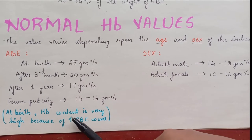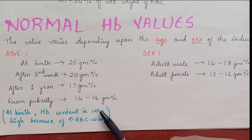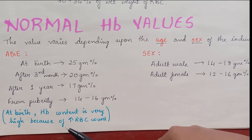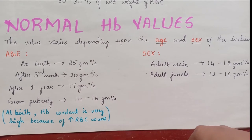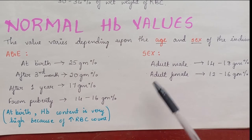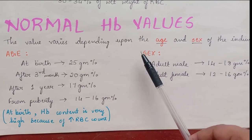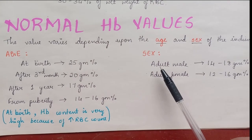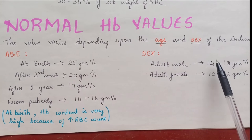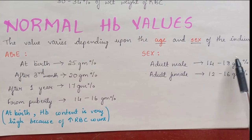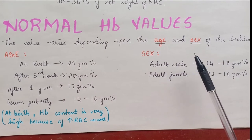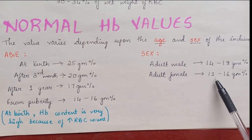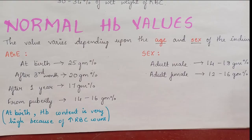At birth, hemoglobin content is very high because of increased RBC count. Regarding sex: in adult males it is 14–18 gram percent, and in adult females it is 12–16 gram percent.